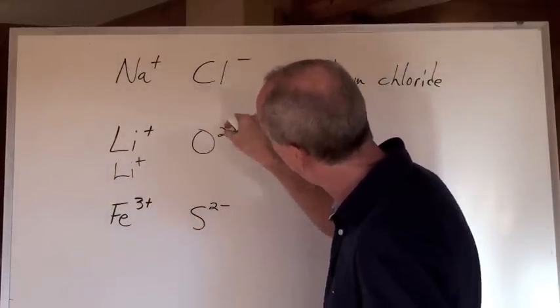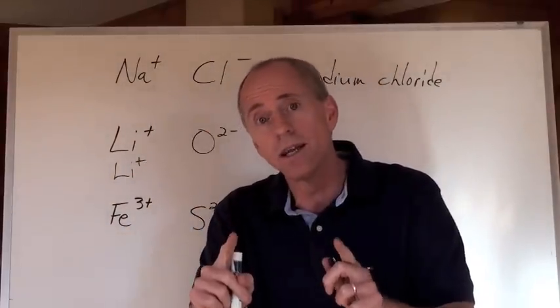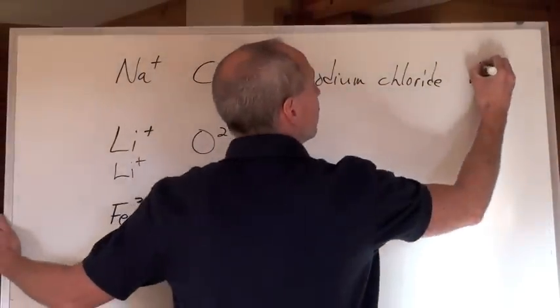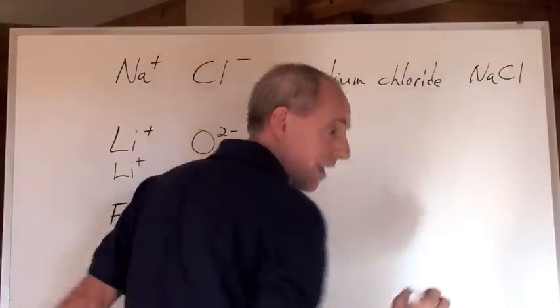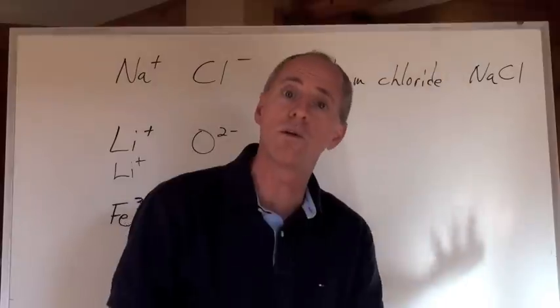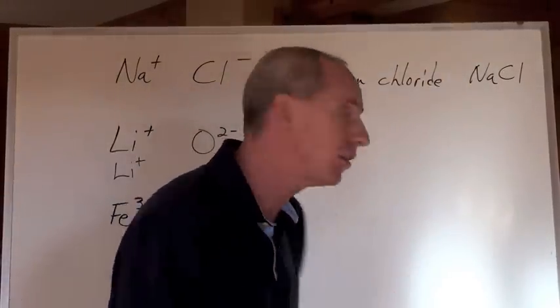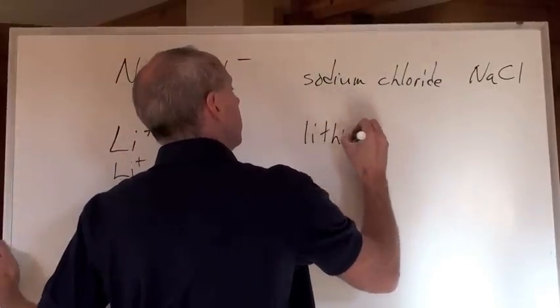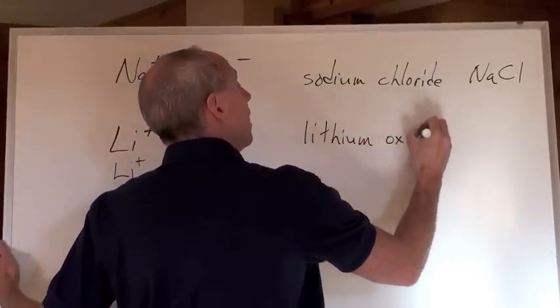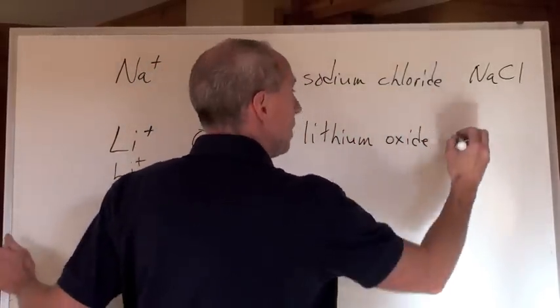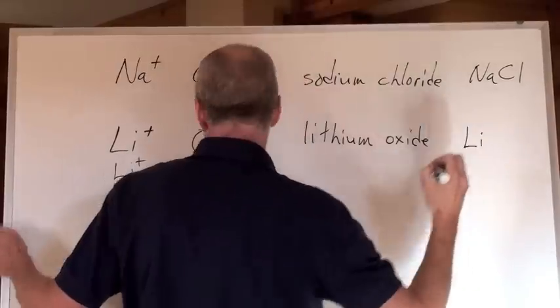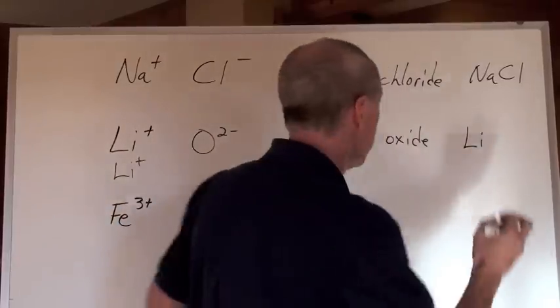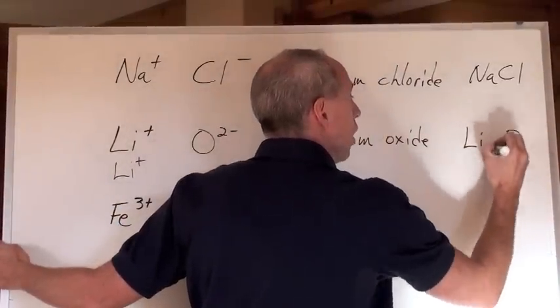You need 2 of these to lose 2 electrons to 1 oxygen. That means the formula—and by the way the formula for sodium chloride is NaCl, it's a 1:1 ratio—for lithium and oxygen, we're going to have the name lithium oxide. The formula, with the 2 lithiums having to give up electrons to 1 oxygen, is Li2O.